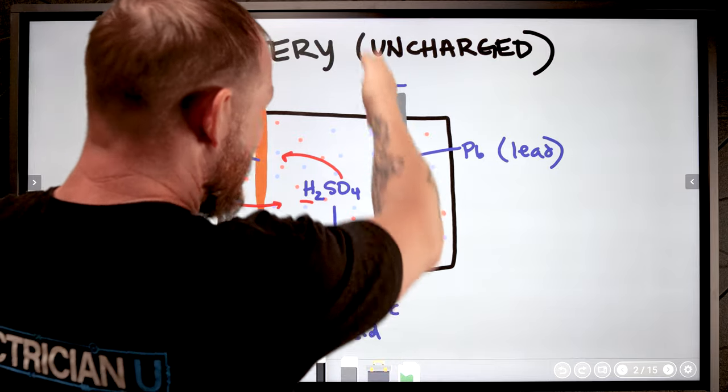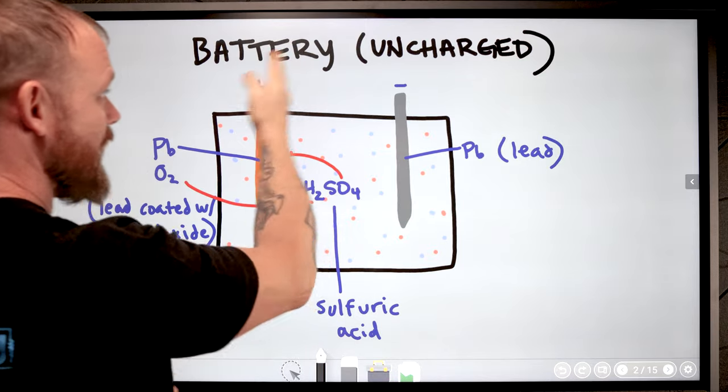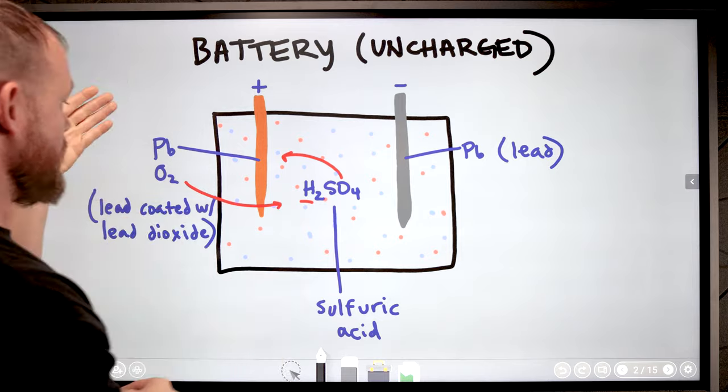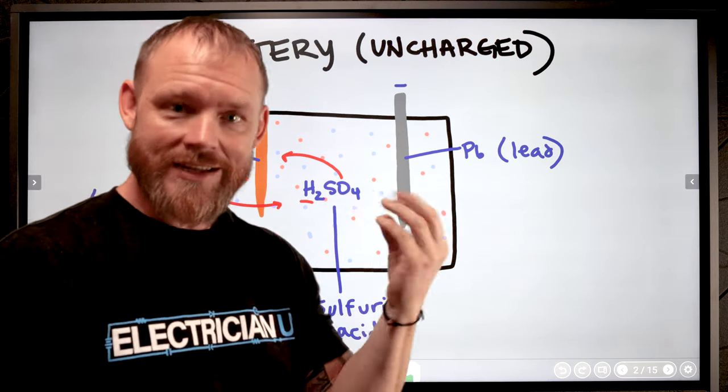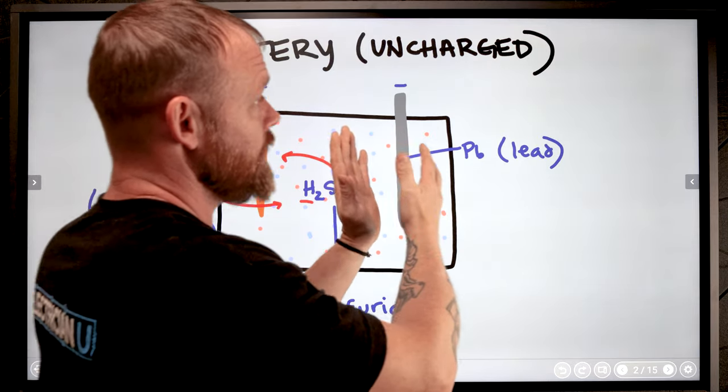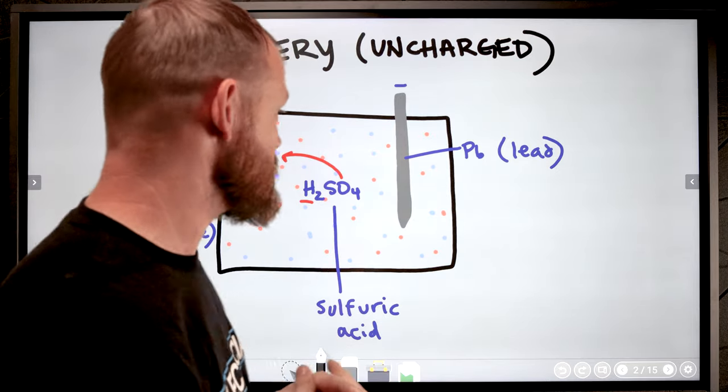We've got two lead electrodes, one of them is an anode, one of them is a cathode. So you've got a positive and a negative. The only difference between these two electrodes, they're both lead, but one of them is coated with a lead dioxide, so it's got this extra dioxide associated with it, which makes one of them attract negative electrical charges and makes the other one repel negative electric charges.